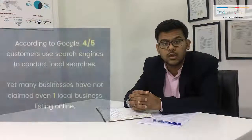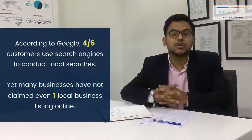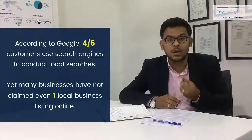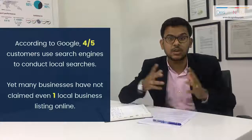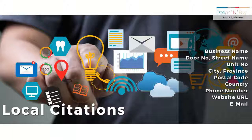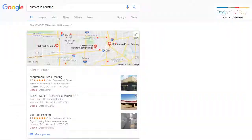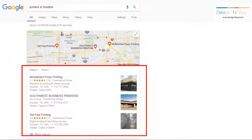According to Google, every 4 out of 5 customers use search engines to conduct local searches. But most businesses have not even claimed a single local listing, and that's a huge opportunity being missed. A digital citation is basically a mention of your business's name, address, and phone number. Citations are usually found on third-party websites that gather information on local businesses, such as Yelp, Yellow Pages, Merchant Circle, City Search and others. These websites will list your business as a printing business and it will be indexed along all the other printing businesses in your area.